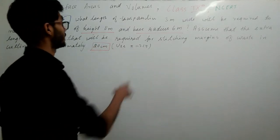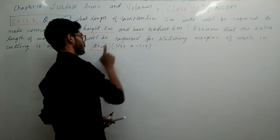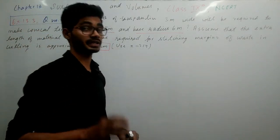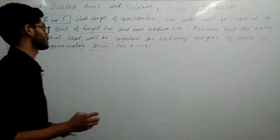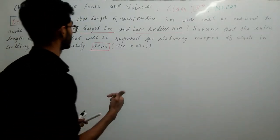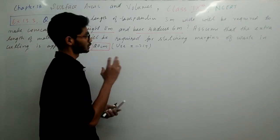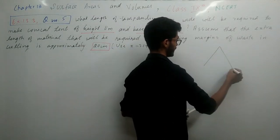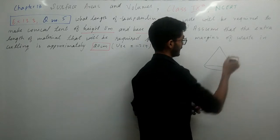So the first thing you have to do is make sure all units are the same before doing any calculations like addition, subtraction, multiplication, or division. So what we do is draw a conical tent which has height and base radius.